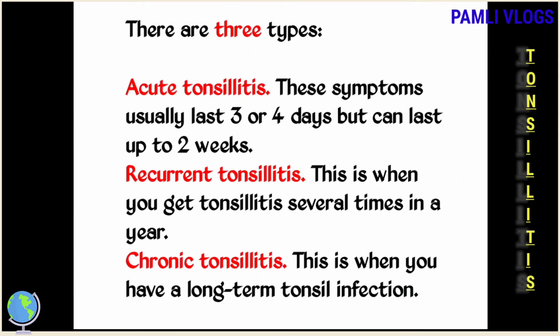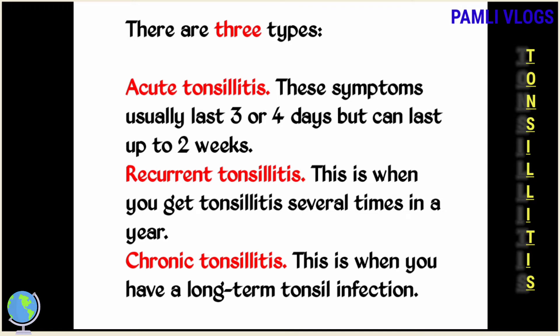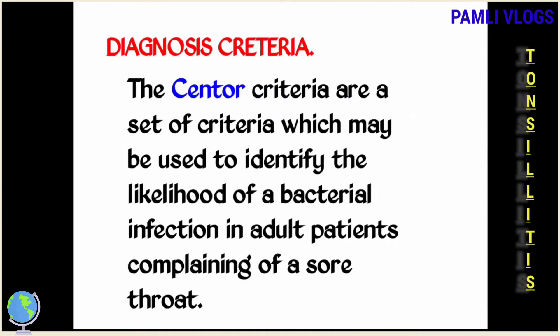There are three types of tonsillitis. Acute tonsillitis: symptoms usually last three to four days but can last up to two weeks. Recurrent tonsillitis: when you get tonsillitis several times in a year. Chronic tonsillitis: when you have a long-term tonsil infection.